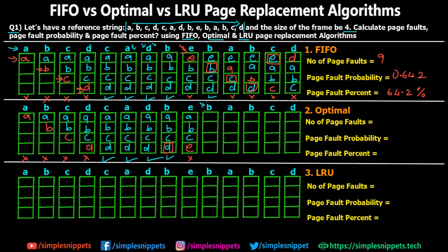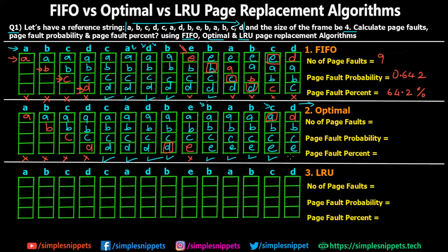Next, B is required and B is already in memory — no page fault. Frames: A, B, C, E. Then A is required and A is there — no page fault. Then B again — no page fault. Then C is required — C is there, no page fault. Frames remain A, B, C, E throughout these steps. Finally D is required but not in memory. Since there are no future steps after D, the optimal algorithm has nothing to look forward to, so any page can be removed. I replace A with D. Frames: D, B, C, E — page fault.